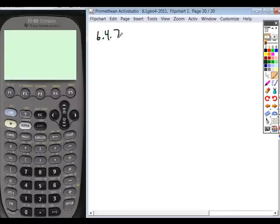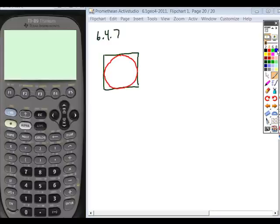In this problem, find the ratio of the area of a circle inscribed in a square. So we take our square, inscribe a circle within it, and compare that to the area of a circle circumscribed about the same square.